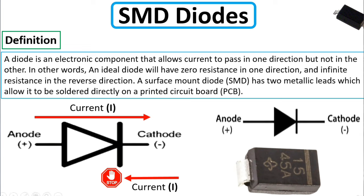This is the symbol of the diode. As you can see, we have the anode or the plus terminal, and here we have the cathode or the negative terminal. The diode allows the current to pass in one direction from anode to cathode and blocks the current from the other direction. In a real diode, you will find a band or a line — this band means the cathode or the negative terminal.